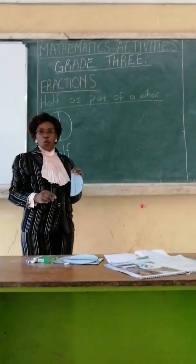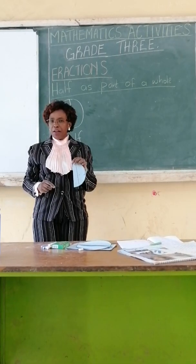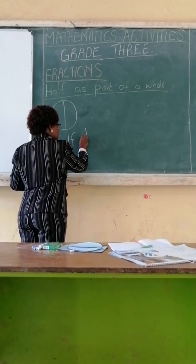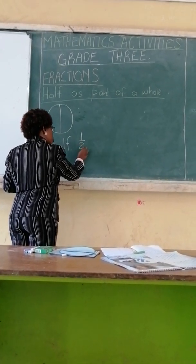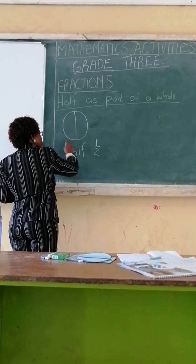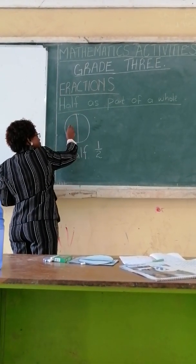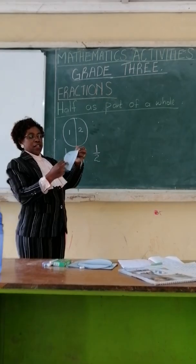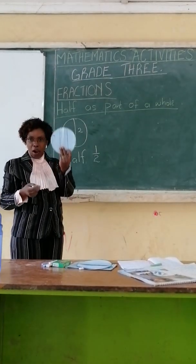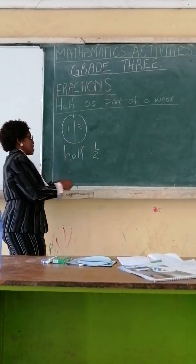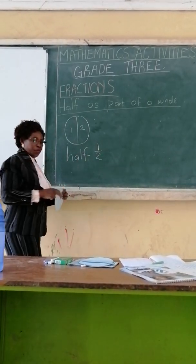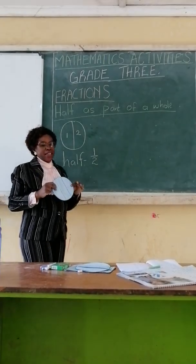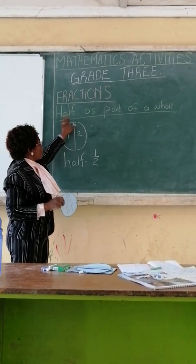And we can also write half in numbers. How do we write half in numbers? We write one, we write a small line, and then write two. The reason why we say this is: one big circle, and now we have cut it into two. We have part one and we have part two, so we have two parts. That makes a whole circle. So, you can write half is the same as one over two. If you see anywhere written one over two, it means that that is half. So, this half is part of a whole.